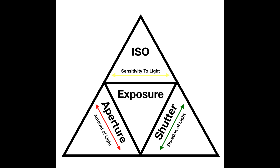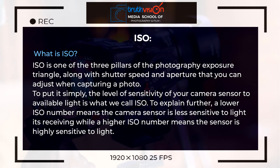Let's start by talking about ISO. Along your photography career you'll hear a lot about increasing or reducing your ISO. Now, what is ISO? It is one of the major pillars of photography in the exposure triangle, along with shutter speed and aperture. ISO is simply defined as the level of sensitivity of your camera sensor to the available light in the environment you are shooting in.